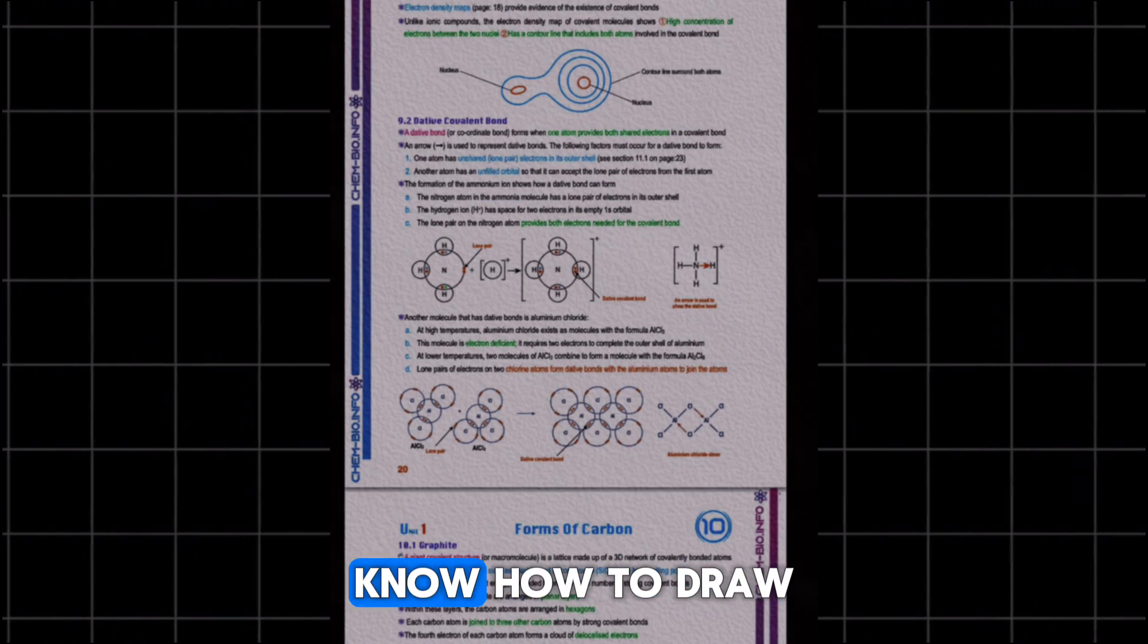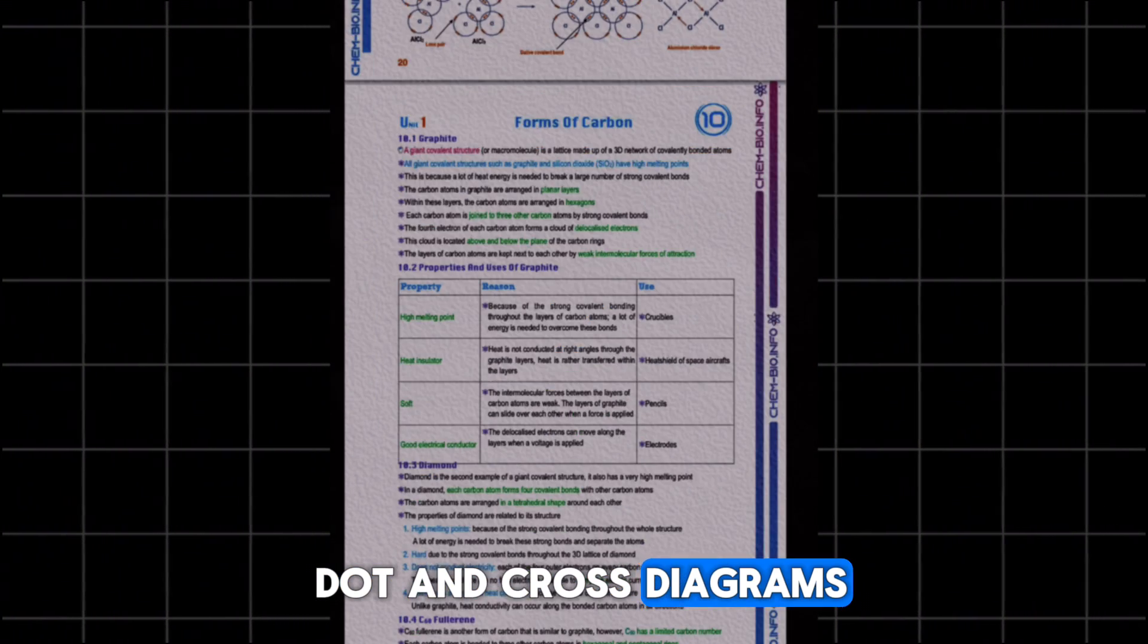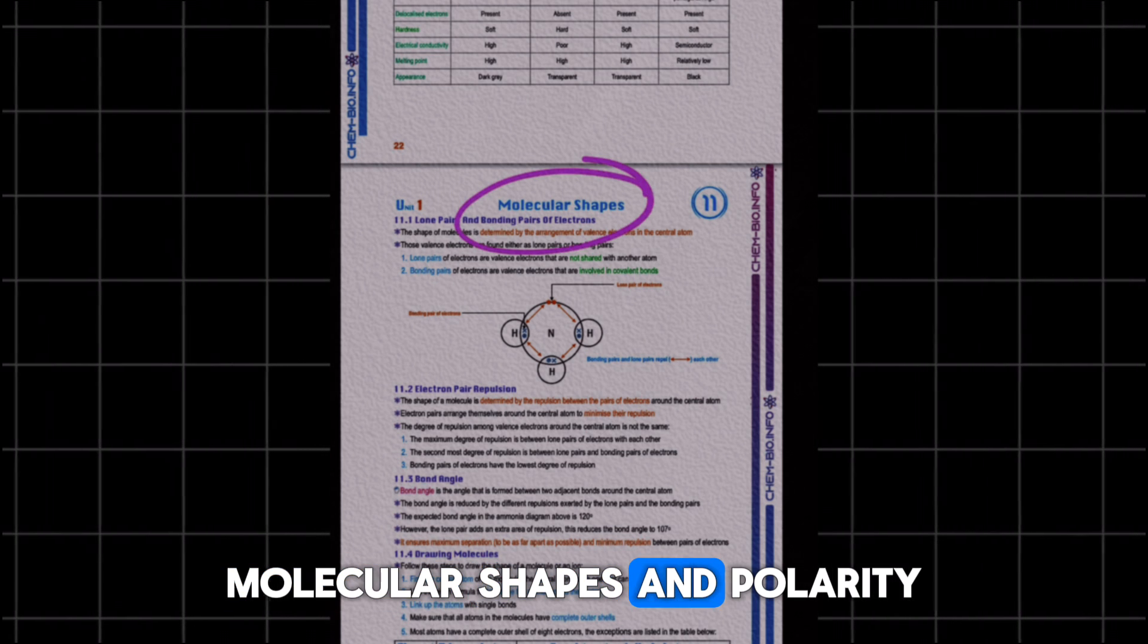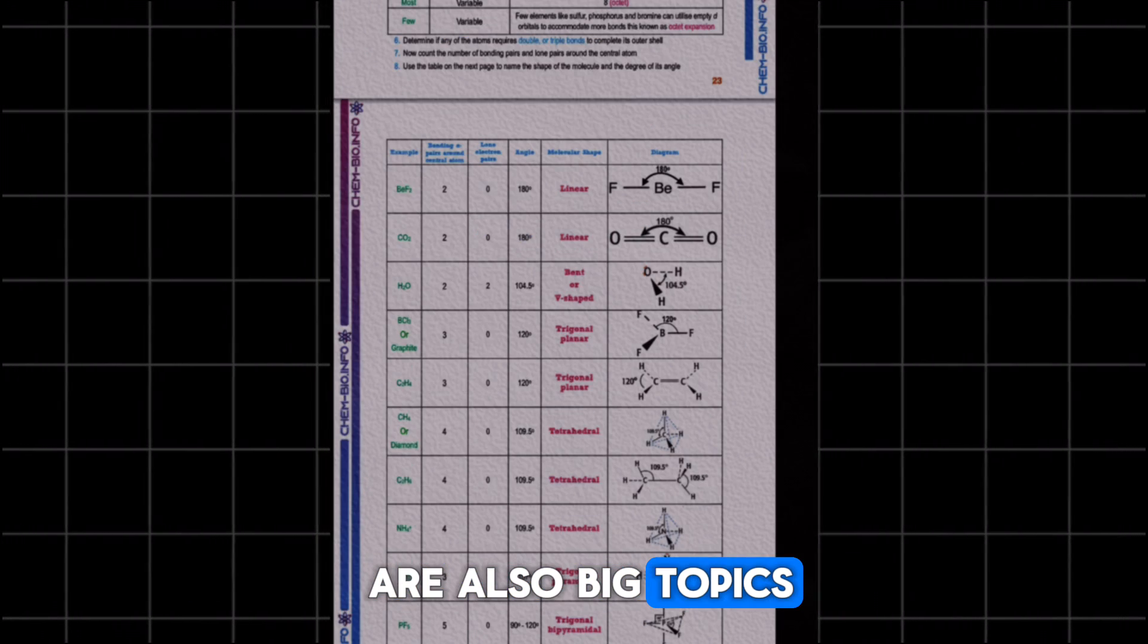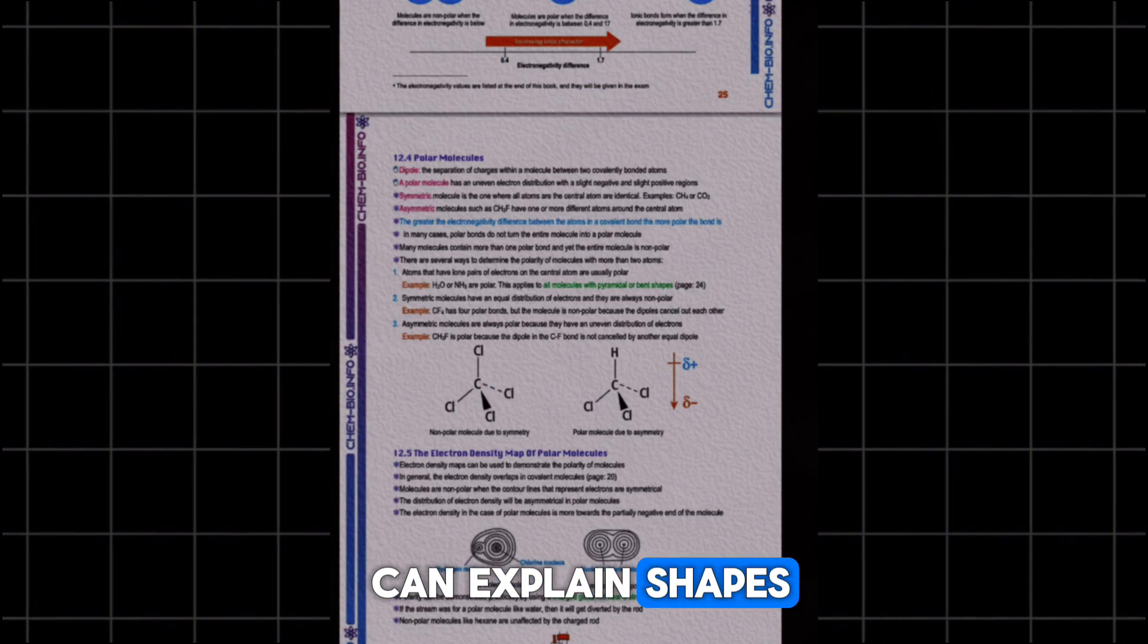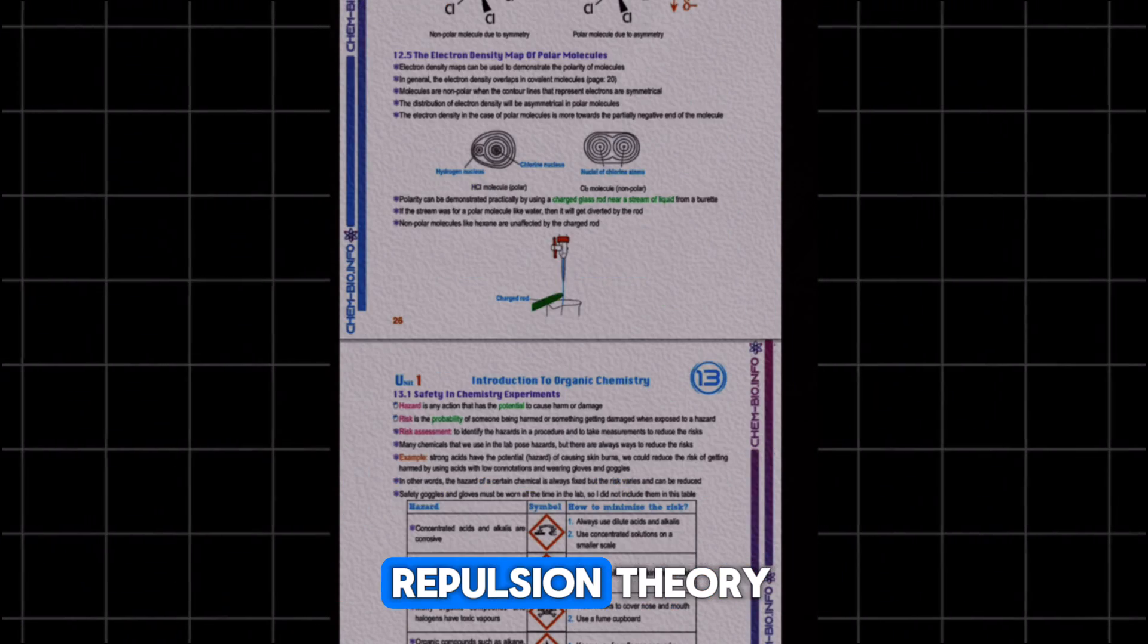When it comes to bonding, know how to draw dot and cross diagrams and to interpret electron density maps. Molecular shapes and polarity are also big topics. So memorize the bond angles and make sure you can explain shapes using the electron pair repulsion theory.